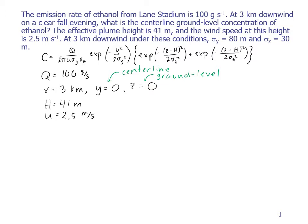And at three kilometers downwind under these conditions, sigma Y equals 80 meters and sigma Z equals 30 meters.